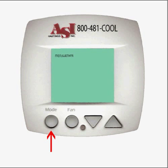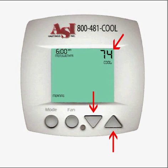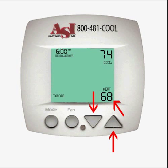Press the mode button. The morning time period for the weekdays is displayed. Use the up and down buttons to set the desired morning start time. Press the mode button. Use the up and down buttons to set the morning cooling temperature. Press the mode button. Use the up and down buttons to set the morning heating temperature.